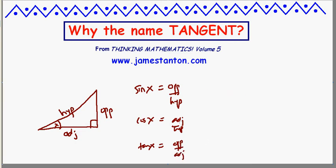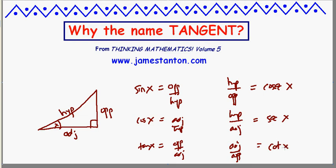That's three of the six possible ratios. I could do hypotenuse over opposite, and that's called the cosecant of x. Very strange. I could do the hypotenuse over the adjacent. That's called the secant of x. And I could also do the adjacent over the opposite. That's called the cotangent of x.